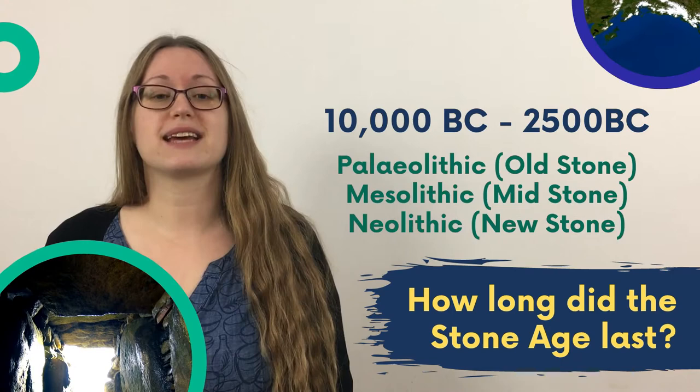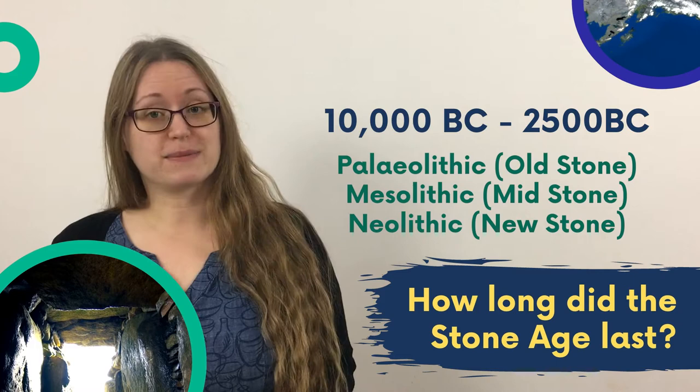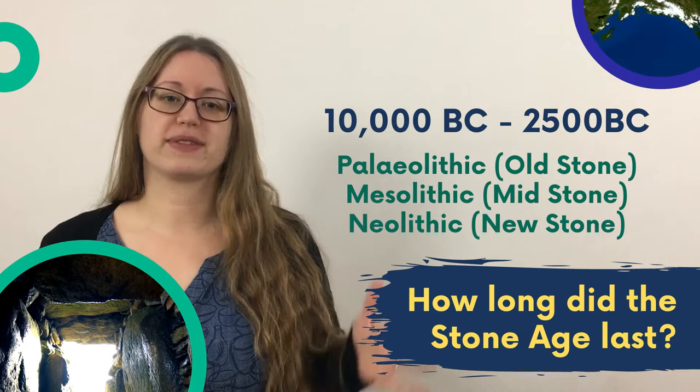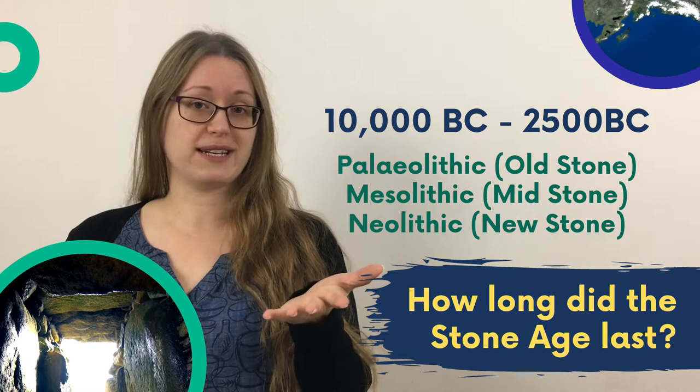Freddie asked how long was the Stone Age period? Well, the Stone Age period was from 10,000 BC to 2,500 BC. It's made of three different eras: the Paleolithic or Old Stone Age, the Mesolithic or Middle Stone Age, and the Neolithic or New Stone Age. So the Stone Age period lasted for a very long time.